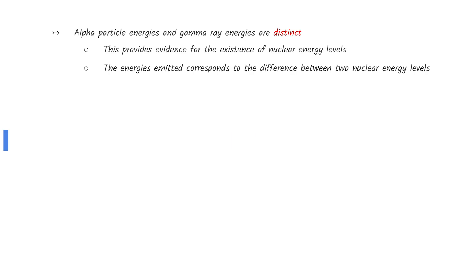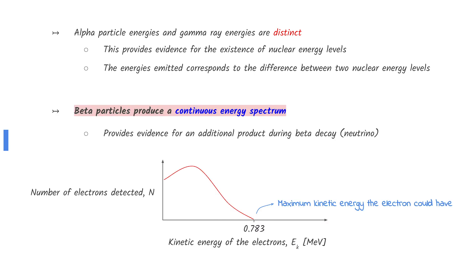Alpha particle energies and gamma ray energies are distinct, which provides evidence for the existence of nuclear energy levels. The beta particle, however, produces a continuous energy spectrum. This can only mean that an additional product — which we now call the neutrino — is formed during beta decay.